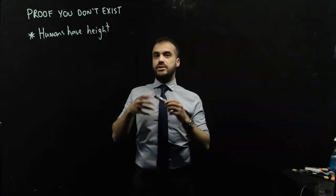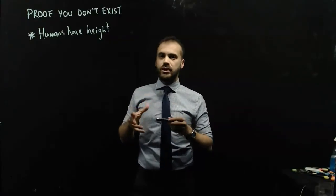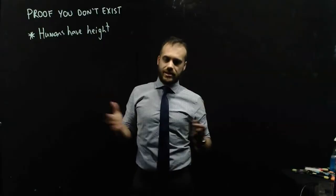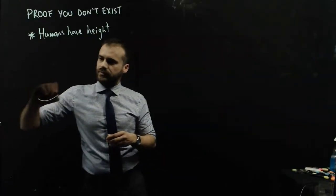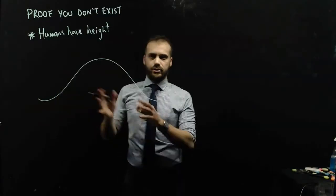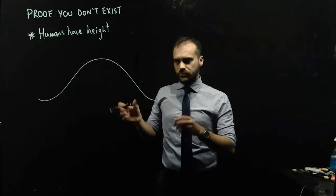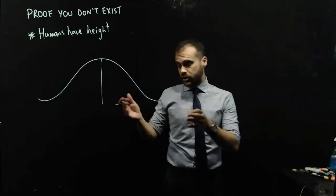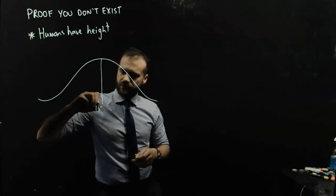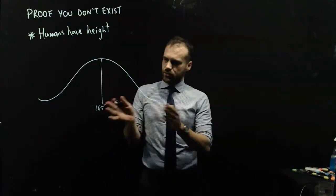We know that height is a continuous random variable, which means that it can be modeled using a probability density function. So, let's draw up a probability density function here. It looks something like that. It's actually a normal distribution, which we haven't talked about before, but stay with me. Now, the average height of a human is about 165cm tall, and we can put in some sort of measurements here.